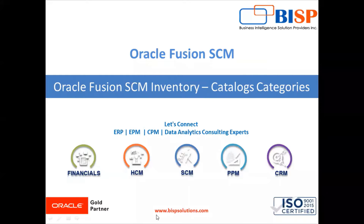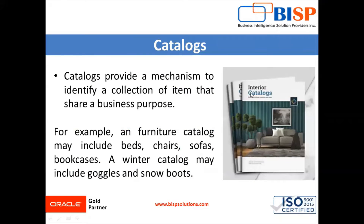Hello everyone, welcome to BSP Solution. My name is Shkuntemre and today's topic is catalogs and categories in Oracle Fusion supply chain management inventory application. Catalogs provide a mechanism to identify a collection of items that share a business purpose — for example, an electronic catalog which includes items like air conditioner, television, and laptop.